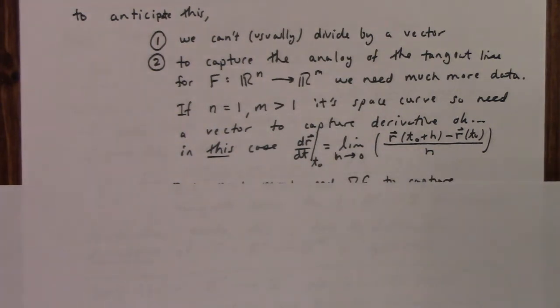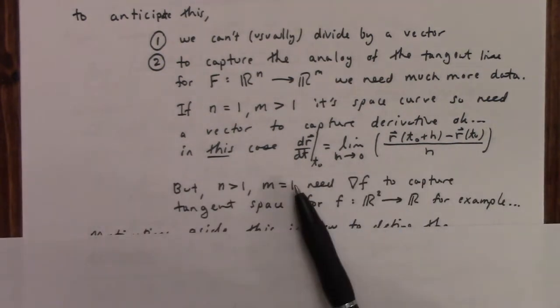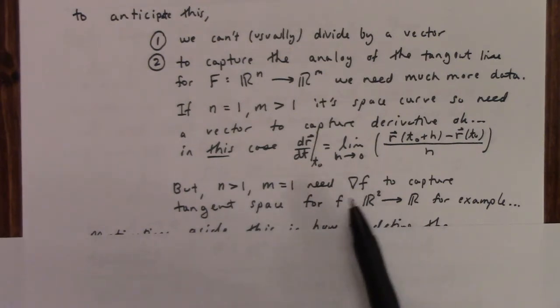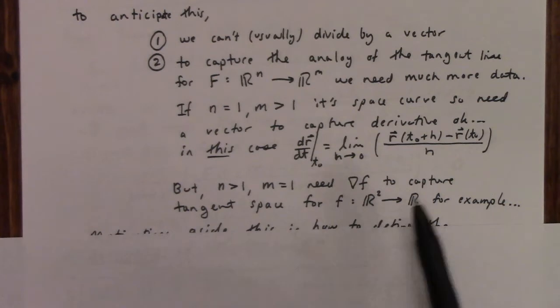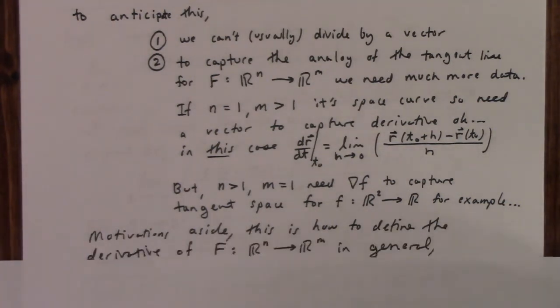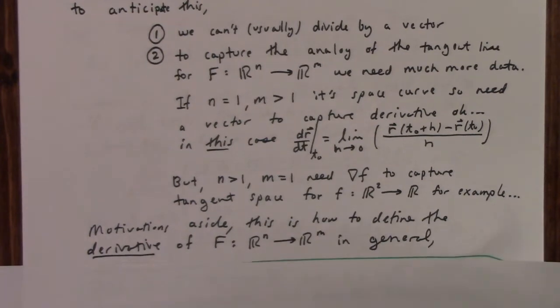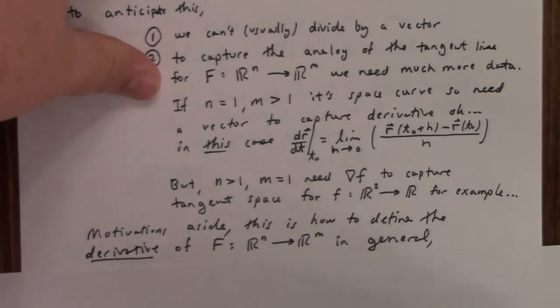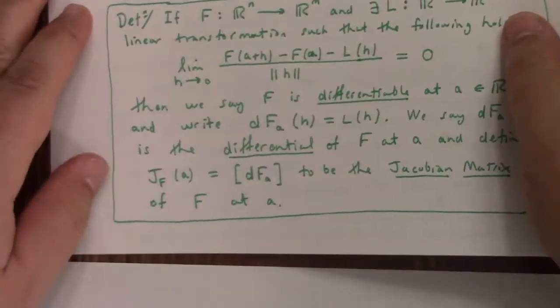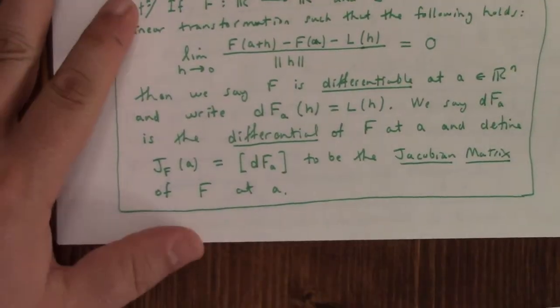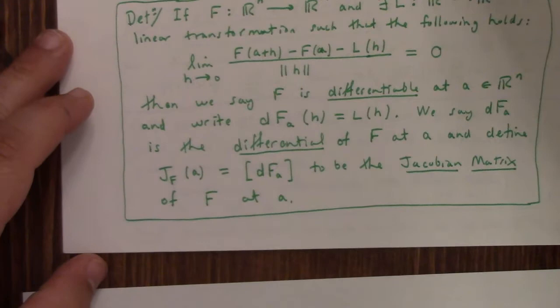But setting that aside, it's usually weirder, right? Like, even when the range is one-dimensional, we need something like a gradient of F to capture the tangent space. All right, so let's see here. So something has to give, right? We need a better definition for the derivative in general, and this is sort of the natural thing to do.